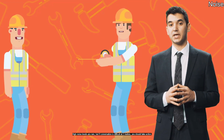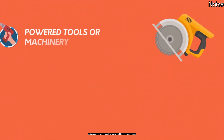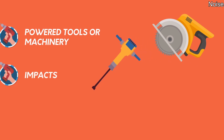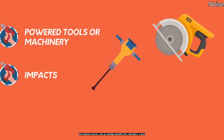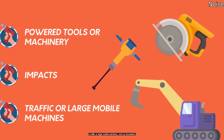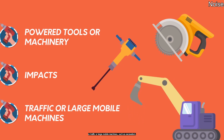Noise can be generated by powered tools or machinery, impacts including hammering, drop forging, pneumatic impact tools and explosive sources such as cartridge-operated tools, detonators or guns, or traffic or large mobile machines such as excavators.